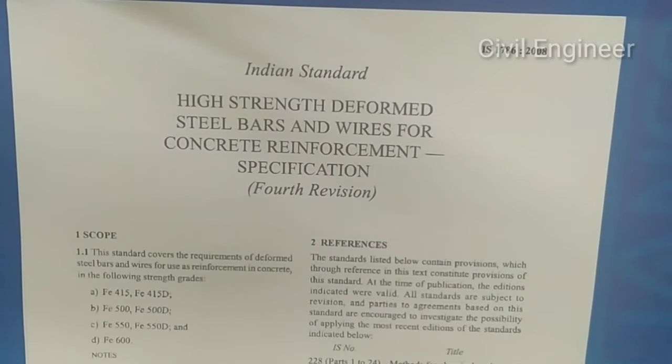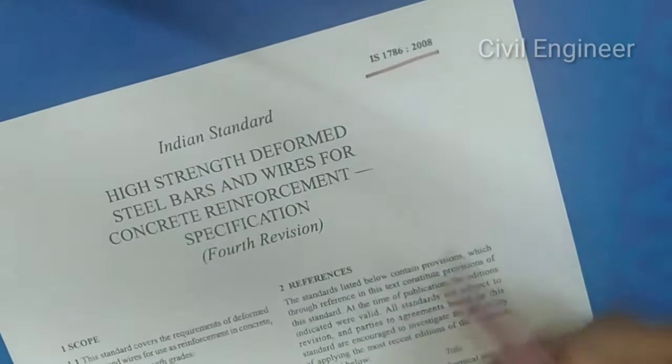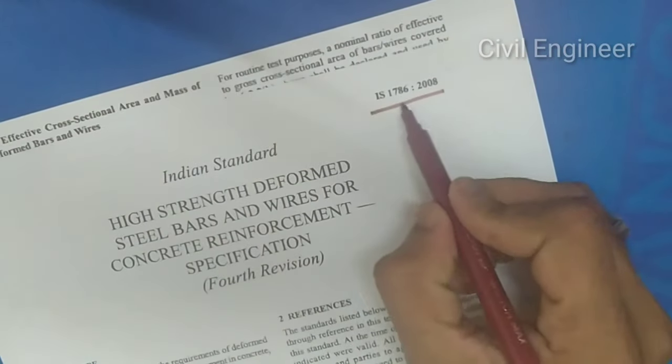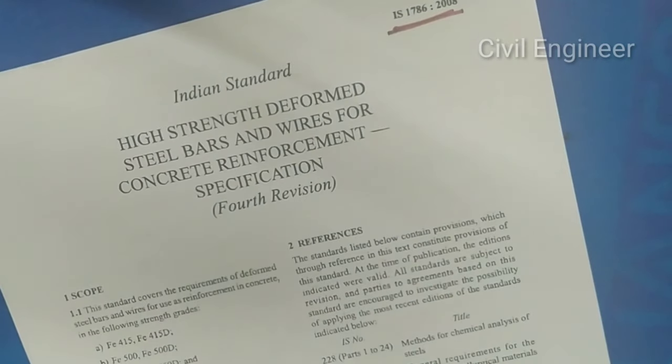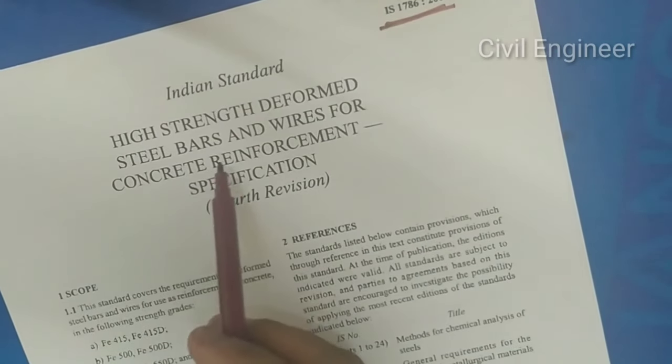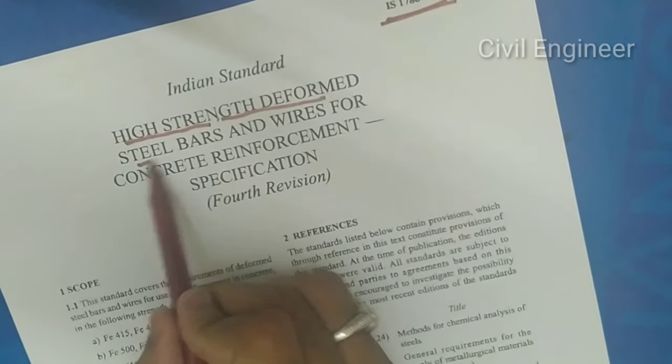If you don't have the standard steel tables, this weight is already in ISO code ISO 1786-2008. We have already explained the ISO code for high-strength deformed steel bars.